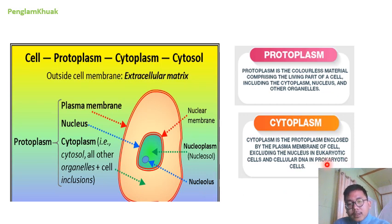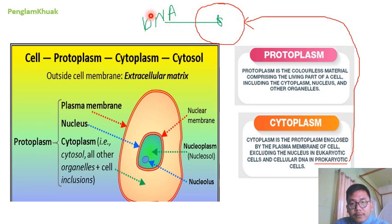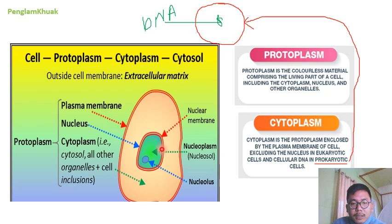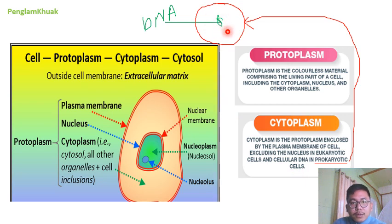In the case of prokaryotic cells, it will exclude the DNA, because prokaryotic cells do not have a nucleus. Let me draw a picture — this is a prokaryotic cell. Since they do not have a nucleus, the DNA will be freely floating inside the cytoplasm. So in prokaryotes, cytoplasm will be the cell cytosol excluding DNA. In eukaryotic cells, our DNA is present inside the nucleus.